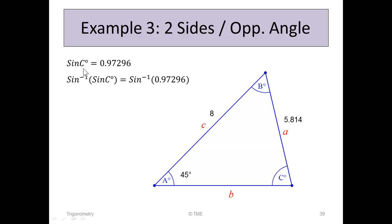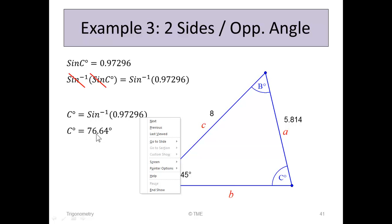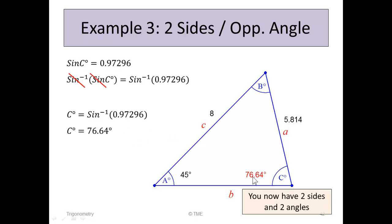Since we want the angle C rather than sine C, we take the inverse sine: C equals inverse sine of 0.97296. Entering this into the calculator gives C equals 76.64 degrees. We now have two sides and two angles, so we've progressed the triangle further.